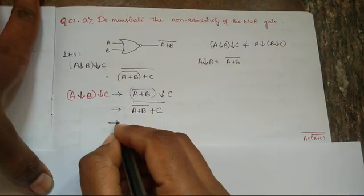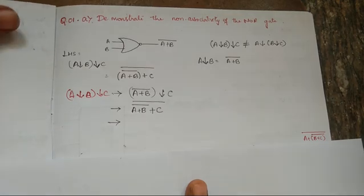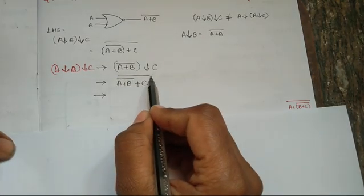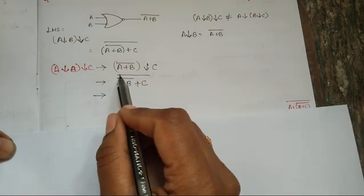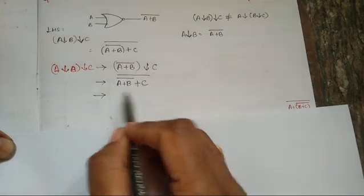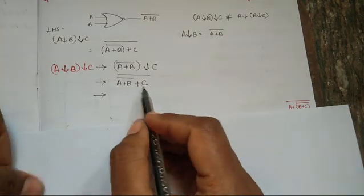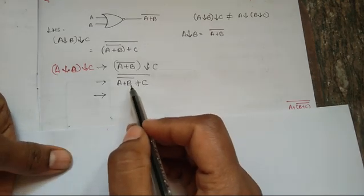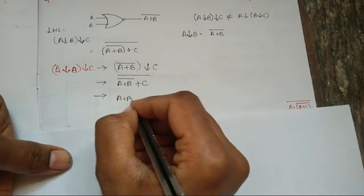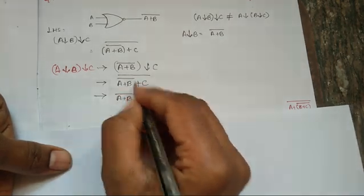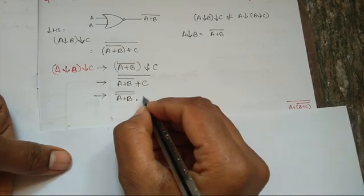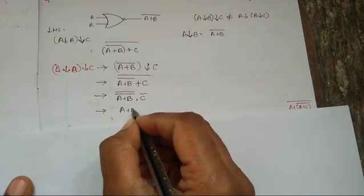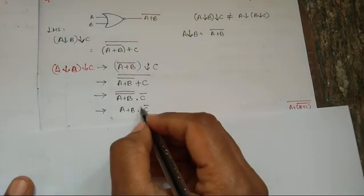Now use De Morgan's theorem to simplify this. Something whole bar — the complement of a sum of terms equals the product of the complements of individual terms. So it becomes A plus B bar, whole bar, into C bar. The double bar cancels, giving A plus B into C bar.